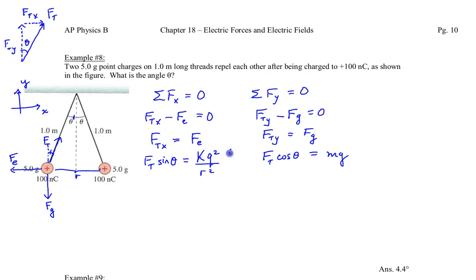And we are trying to solve for theta, and I think a little trick we can employ here would be to get rid of the tension, because we don't know that, and if we divide equation 1 by equation 2, we'll get Ft sine theta divided by Ft cosine theta is equal to Kq squared over R squared, divided by Mg.